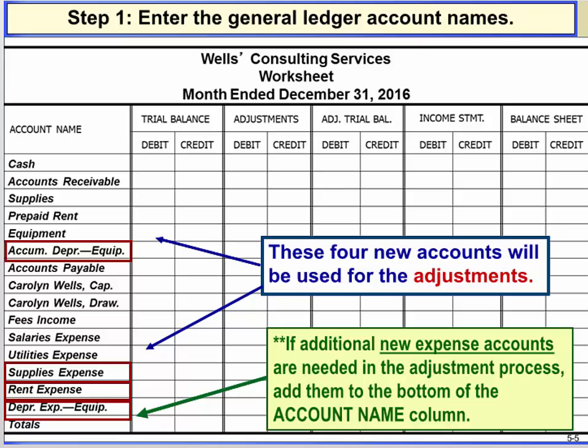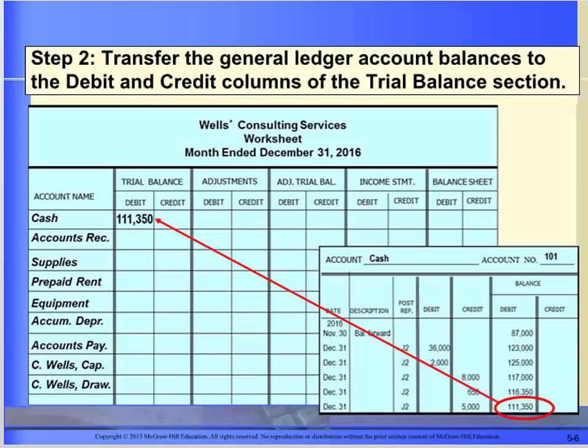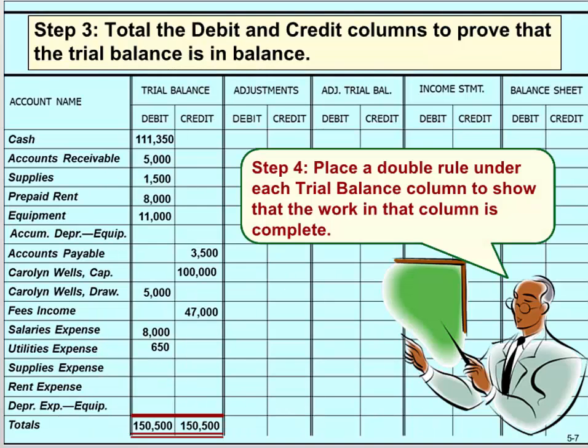The first step is to enter the General Ledger account names. We will need to add four new accounts at this time so that we can make adjustments at the end of the month. If you are not sure whether you need any additional accounts or what those account names will be, you can add them at the bottom of the existing list of accounts in that column.